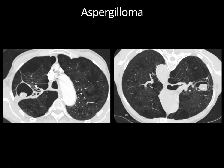Aspergillomas are mass-like fungus balls composed of Aspergillus mixed with mucus and cellular debris filling a cavity — a non-invasive type of pulmonary aspergillosis. Other types include ABPA (allergic bronchopulmonary aspergillosis), which typically occurs in asthmatic patients and gives a finger-in-glove appearance of mucus-impacted bronchiectasis. The angioinvasive type occurs in immunocompromised patients and gives the classic halo sign: a solid nodule surrounded by ground glass representing hemorrhage. Aspergillomas occur in patients with normal immunity but abnormal lungs with pre-existing cavities — most commonly from post-primary tuberculosis, but also emphysema and sarcoidosis.